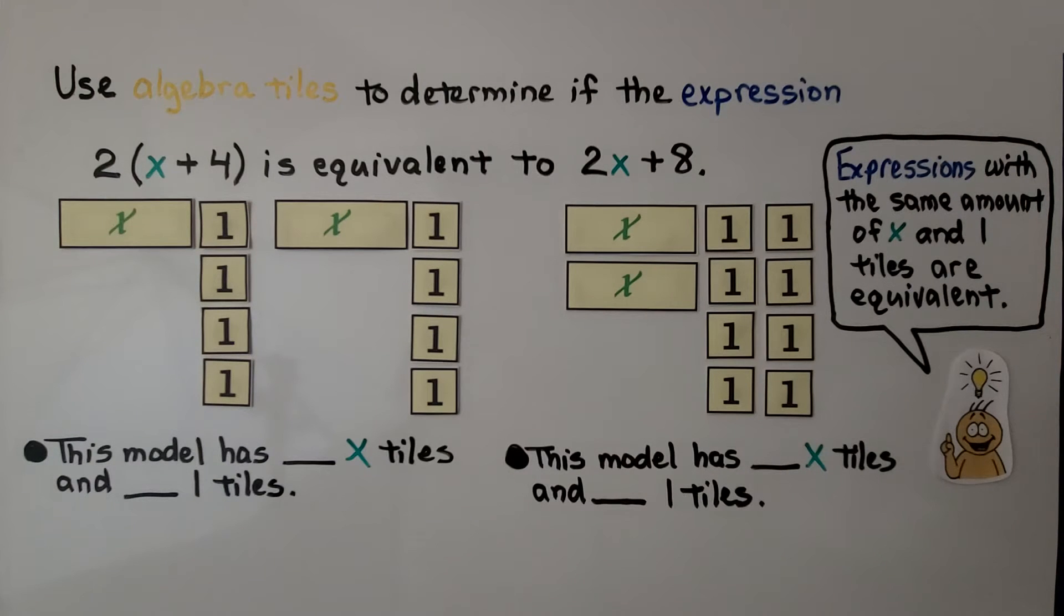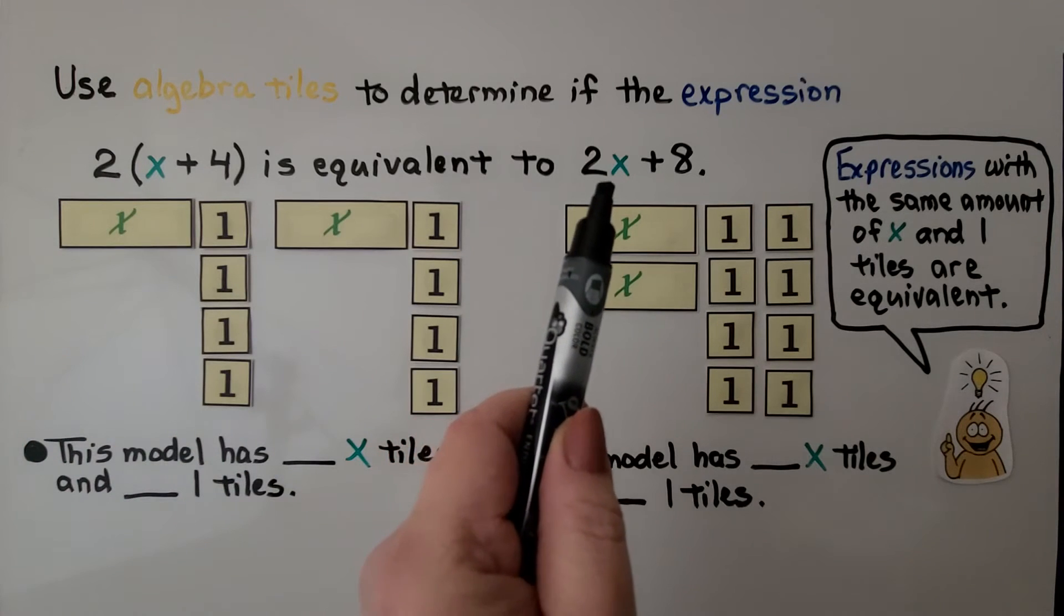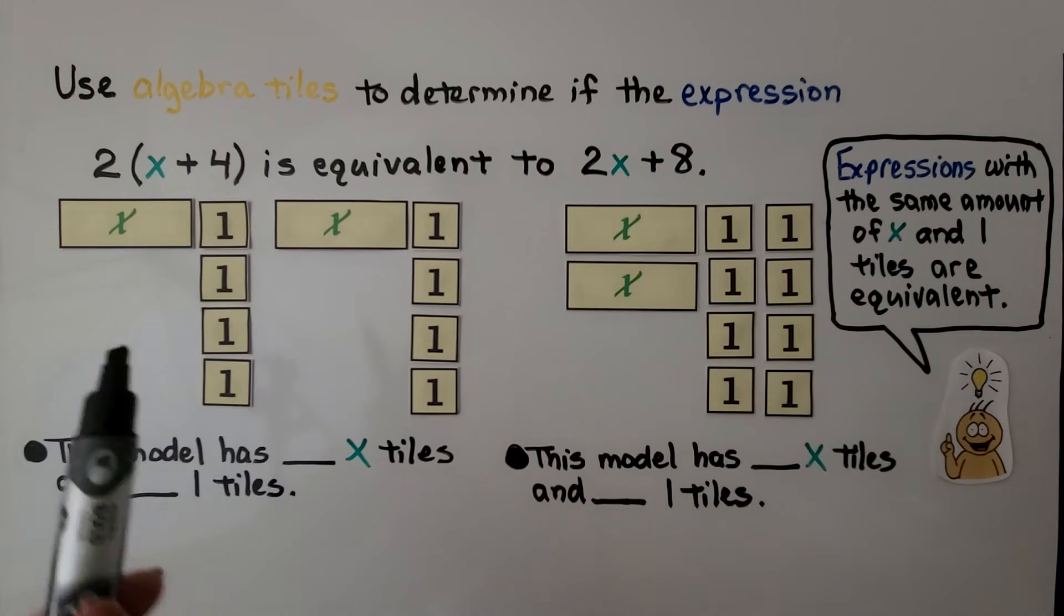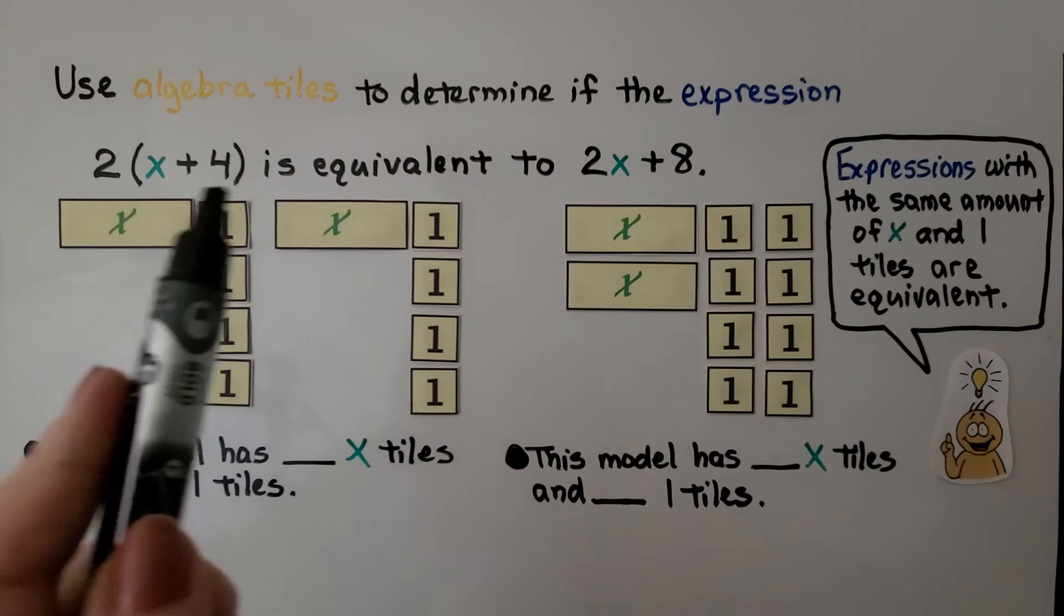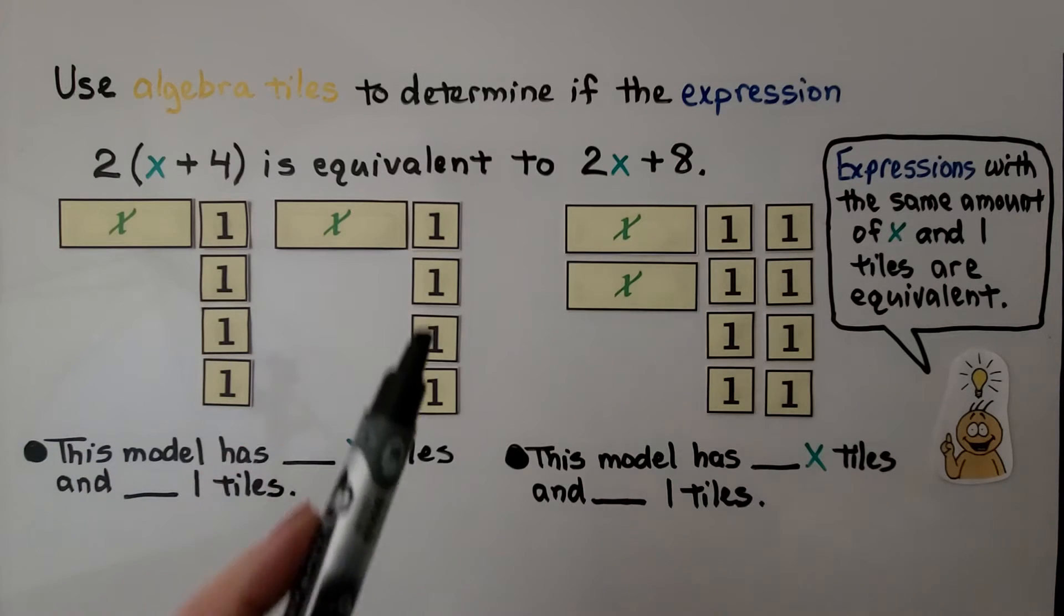It's telling us to use algebra tiles to determine if the expression 2(x + 4) is equivalent to 2x + 8. Using my tiles, we have an x here and an x here, and we have four ones and we have four ones.